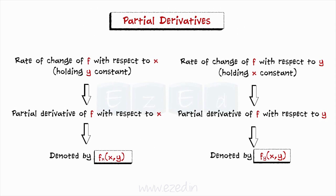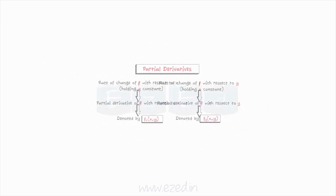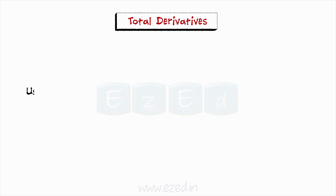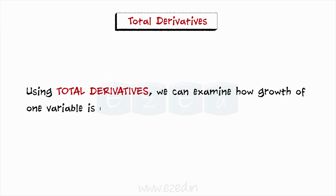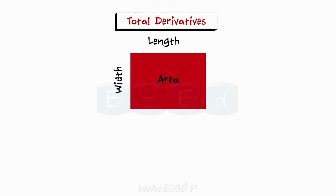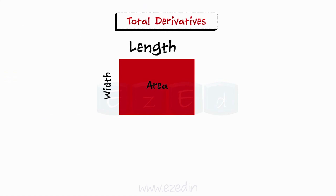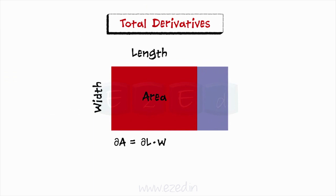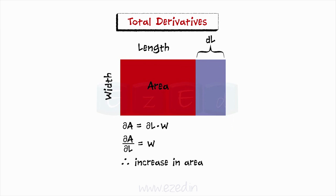In the previous section we discussed partial derivatives of f with respect to a single variable while keeping all of the other independent variables constant. Now we move on to the related concept of a total derivative. Using total derivatives, we can examine how growth of one variable is caused by growth of all other variables. Assume you want to increase the square footage of a house where area equals length times width, or A equals LW. If you increase the length, the change in area equals the increase in length times the current width, giving del A by del L equals W — the partial derivative with respect to length. Therefore the increase in area is dA equals del A by del L times dL.